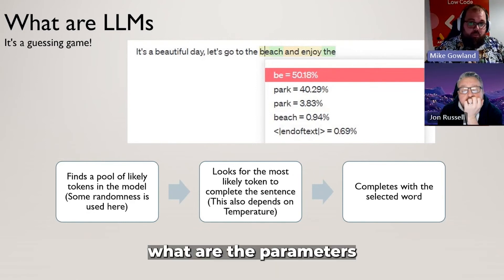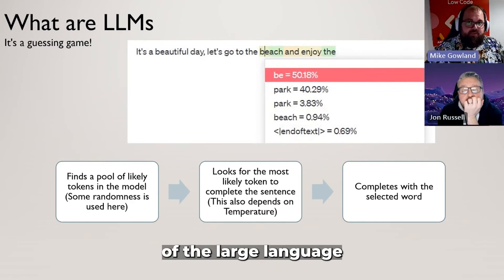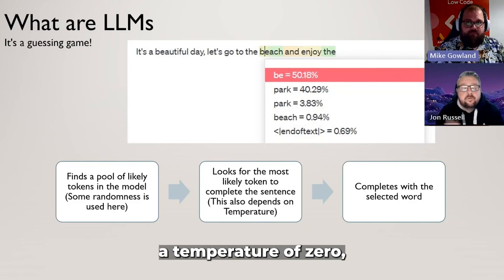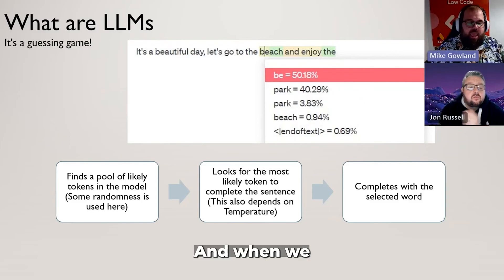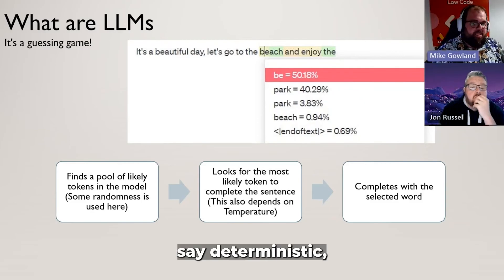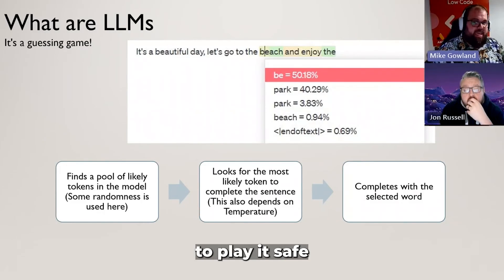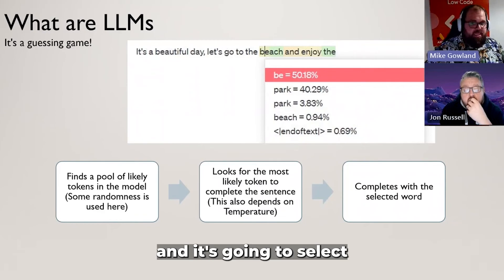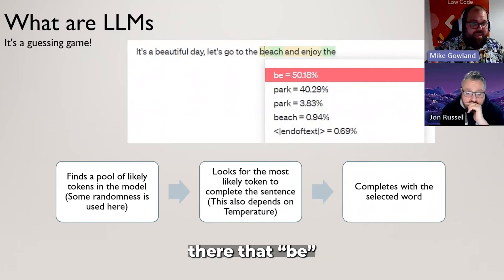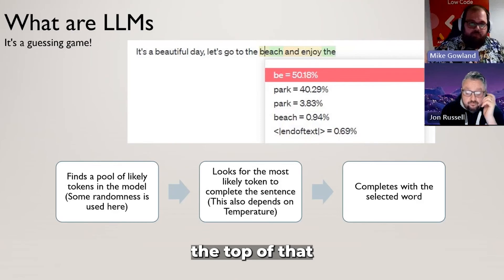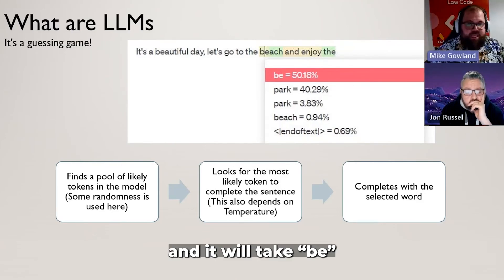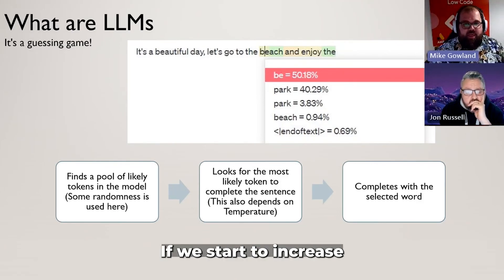This is where we start to look at one of the parameters of the large language model known as temperature. What temperature means is that if we have a temperature of zero, a large language model is going to be very deterministic in its response. When we say deterministic, what we mean is that it's going to play it safe and select that top percentage — that 'BE'. If you have it at zero, it's just going to skim the top of that pool of tokens and take 'BE' and continue with that.